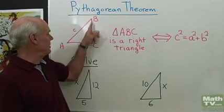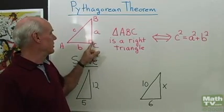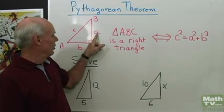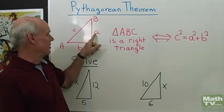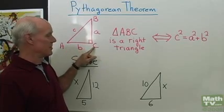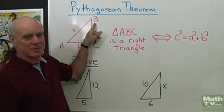If this triangle ABC is labeled this way, where I use capital letters for the vertices of the triangle and then lowercase letters for the sides of the triangle, so side A is opposite angle A, side C is opposite angle C, and side B is opposite angle B.